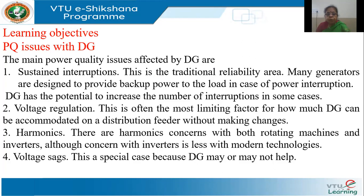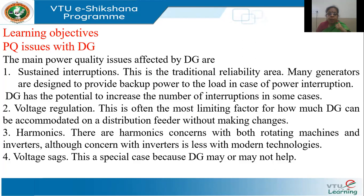The third issue is harmonics. We have seen in chapters 3 and 4 how harmonics are harmful to all components in the system — transmission lines, cables, transformers, rotating machines, and loads like computers. We will look at how these are affected by DG and voltage sag, and whether voltage sag can be improved with DG or not. These are the issues I will be addressing in this session.